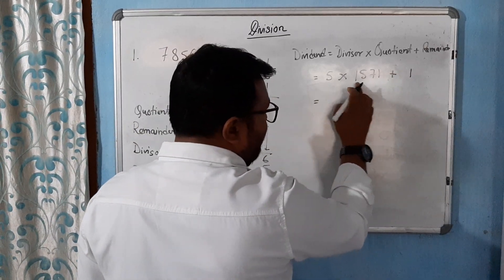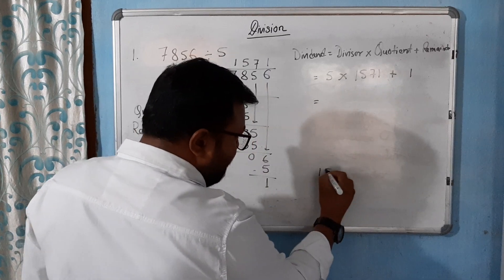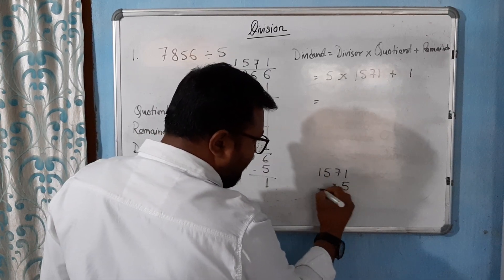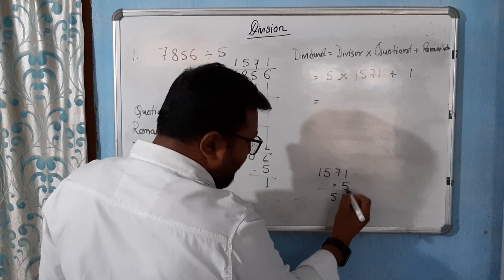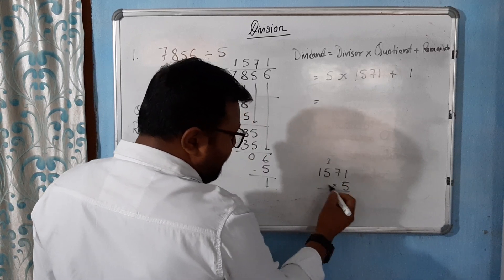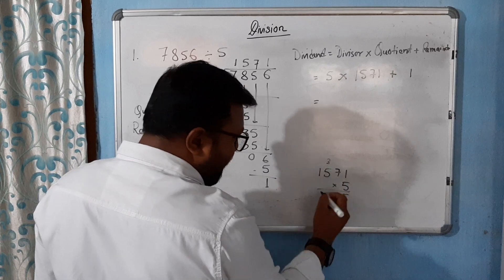See, we will multiply 5 into 1571. See here, 1571 into 5. 5 times 1 is 5, 5 times 7 is 35, 5 times 5 is 25 plus 3 is 28.